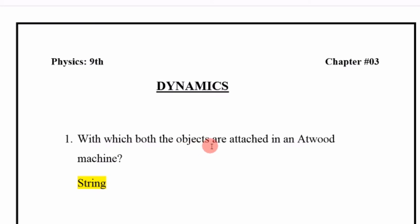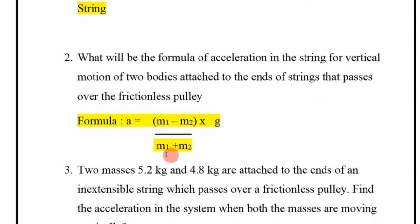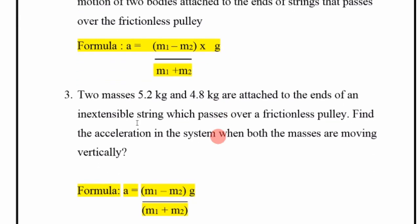What will be the formula of acceleration in the string for vertical motion of two bodies attached to the end of a string that passes over a frictionless pulley? Acceleration is equal to m1 minus m2, divided by m1 plus m2, multiplied by g.